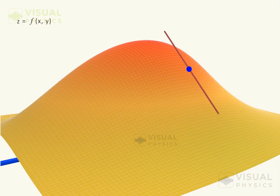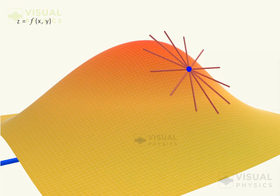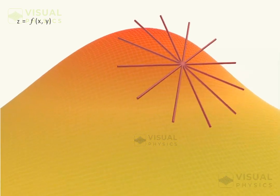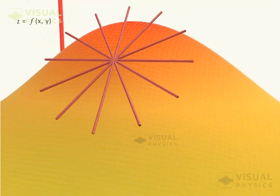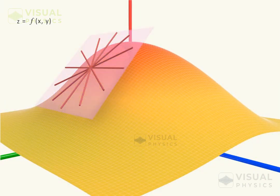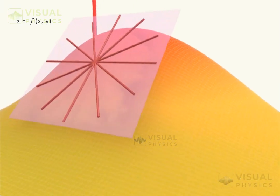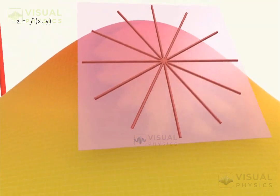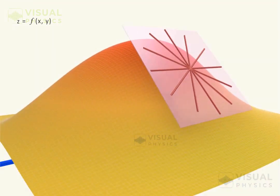If we try to draw a tangent line at a point on this surface, there is no single tangent line — there are infinitely many tangent lines, where each tangent represents the slope of the surface along that direction. However, all these lines will lie in a plane, which can be called the tangent plane to the surface at that point.